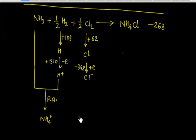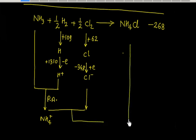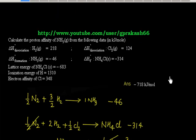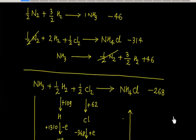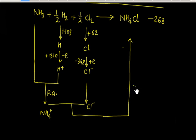This NH4⁺ then combines with Cl⁻ to form NH4Cl. In this process, energy is released because NH4⁺ and Cl⁻ form the NH4Cl lattice. This is the lattice energy released, which is minus 683 kJ per mole.